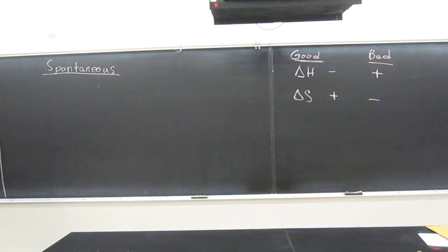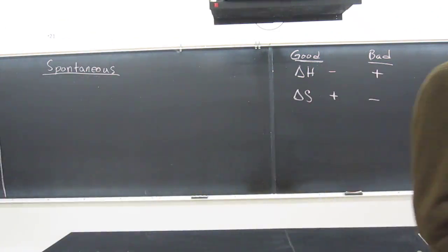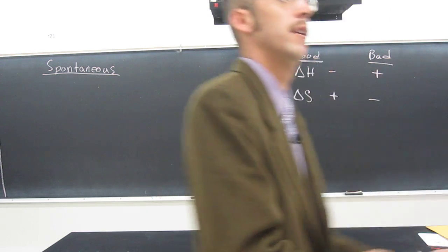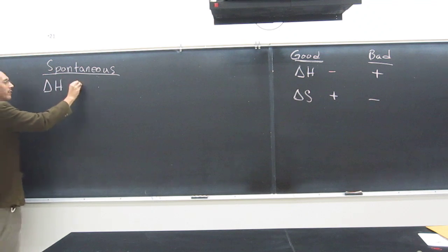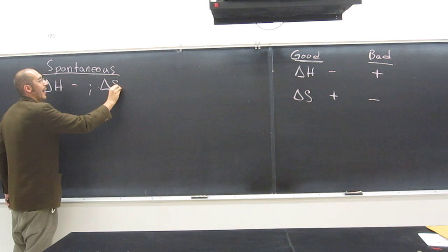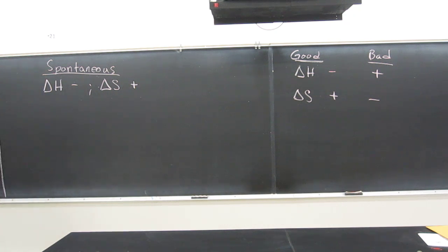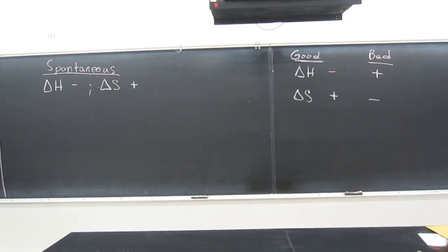In the first set, the process will always be spontaneous. You know it will always be spontaneous if you've got negative delta H and positive delta S. Does that make sense? Because those are the good things. If they're both there, it's going to happen. It's going to be spontaneous.